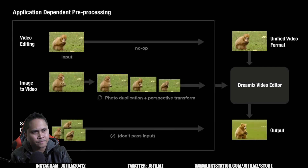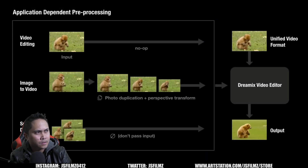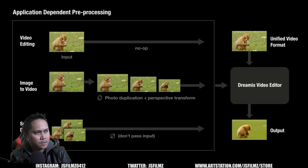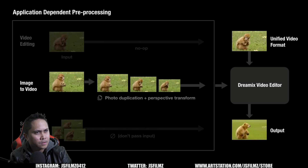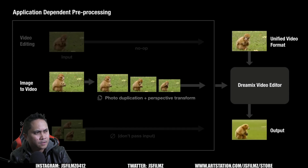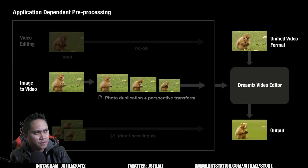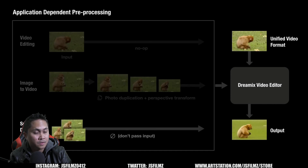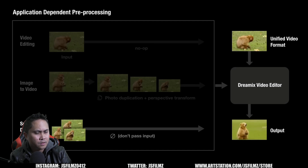As an extreme example, it allows adding motion to a static video using just the general video editor. They further propose a new framework for image animation: by duplicating the input frame and transforming it using perspective transformations, they synthesize a coarse video with some camera motion. Passing it through the Dreamix video editor allows editing both appearance and motion using a text prompt.